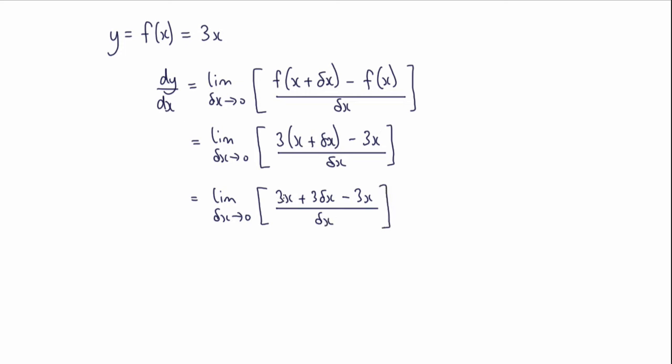So what we'll have is that this 3x here will cancel with this one, and the delta x will cancel here. So what I'm actually left with is the limit as delta x tends to 0 of, well, it's just 3. Well, there's no delta x's left, so the answer is just simply 3.